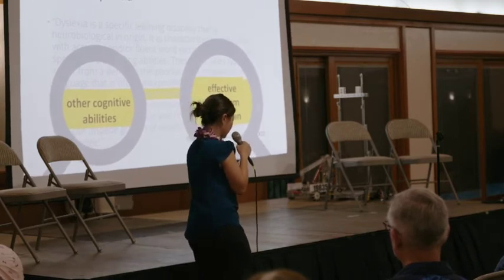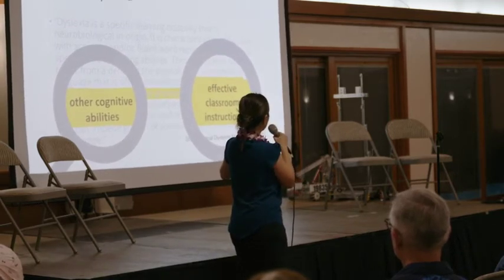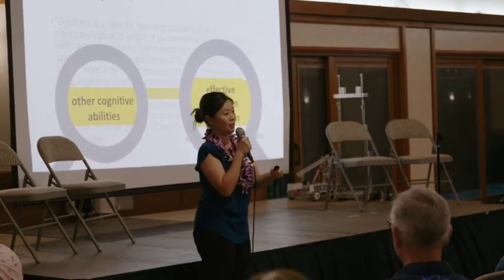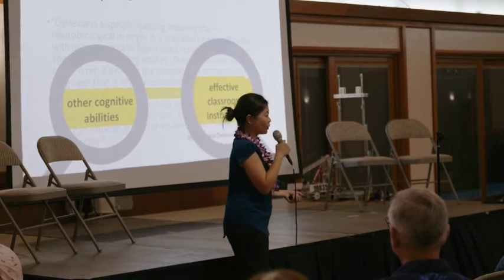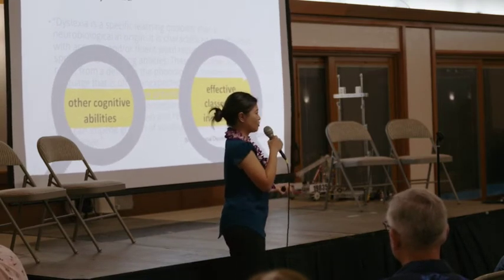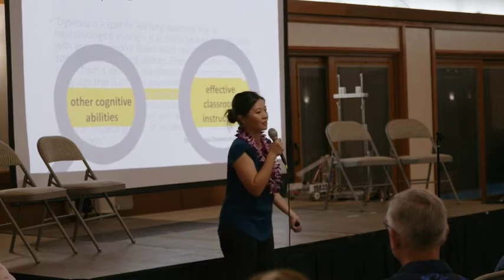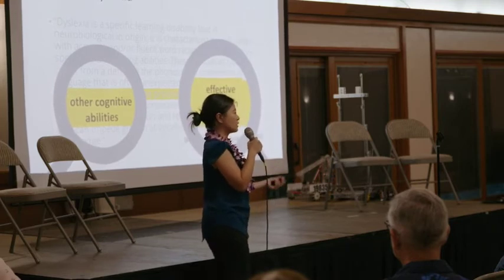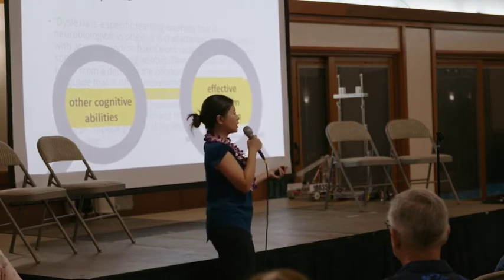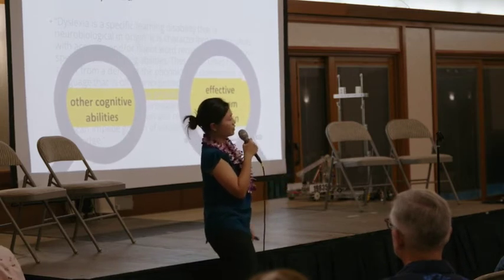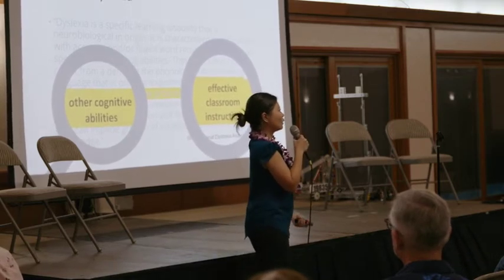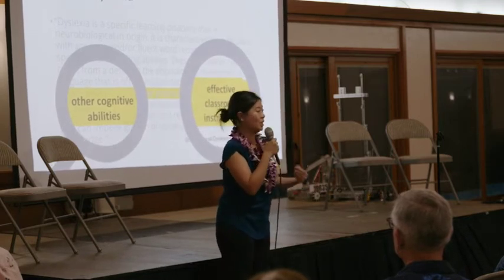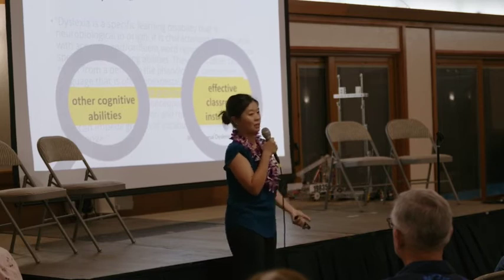Effective classroom instruction is also in the definition because we can't diagnose dyslexia unless we know that effective classroom instruction has been provided. For example, if a new student just moved from a non-English speaking country and the teacher observes that a seven-year-old can't read 'cat,' it's not because the child is dyslexic — it's because there's no effective classroom instruction in English. So we can't diagnose dyslexia in that case, and it makes no sense to do so.